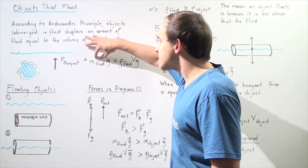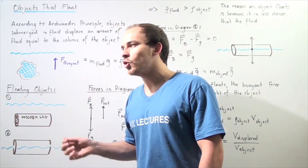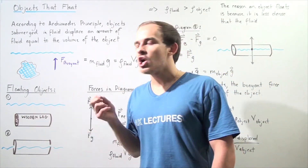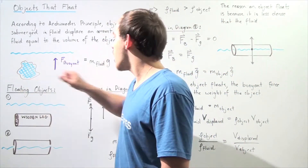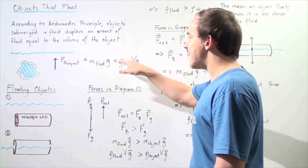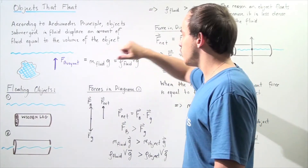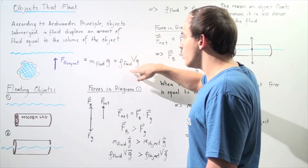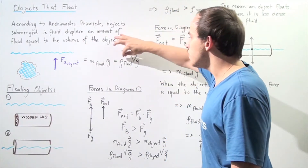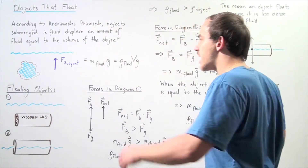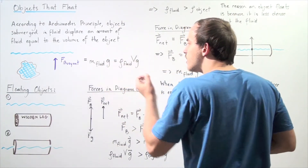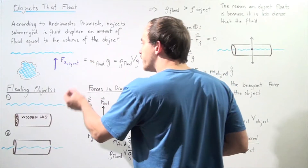The mass of the fluid is simply the density of the fluid multiplied by the volume of the fluid displaced, which is equal to the volume of the object. So if we choose the volume of the object to be V and the density of the fluid to be rho fluid, we can replace mass of the fluid with rho fluid times the volume of our object. This equation allows us to calculate the magnitude of our buoyant force.